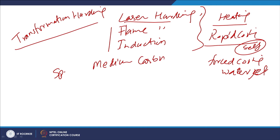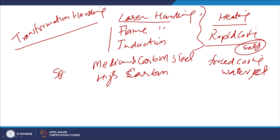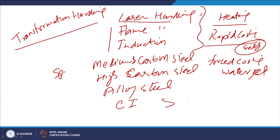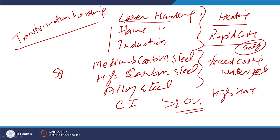Medium carbon steels, high carbon steels, alloy steels, and cast irons having carbon content greater than 2% are applicable. Since these materials offer high hardenability, their surface properties can be improved through transformation hardening.